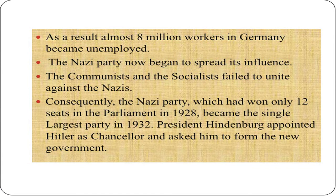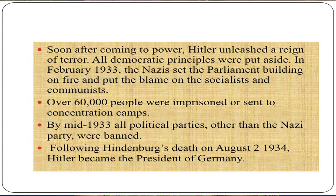The Nazi Party began to spread its influence. The Communists and Socialists failed to unite against the Nazis. Consequently, the Nazi Party, which had won only 12 seats in parliament in 1928, became the single largest party in 1932. President Hindenburg appointed Hitler as Chancellor and asked him to form the new government. Soon after coming to power, Hitler unleashed a reign of terror and all democratic principles were put aside. In February 1933, the Nazis set the parliament building on fire and put the blame on the Socialists and Communists. Over 60,000 people were imprisoned or sent to concentration camps.